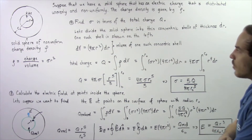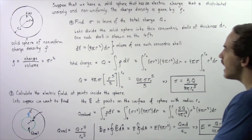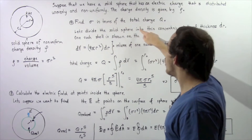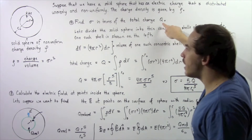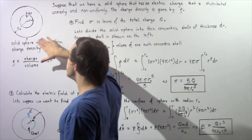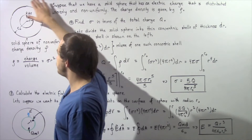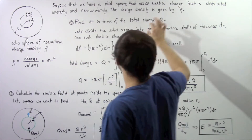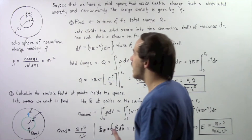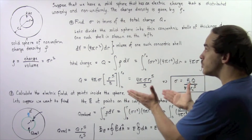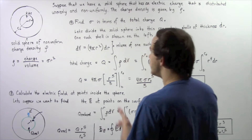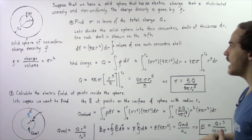In part A, we want to find sigma in terms of the total charge q. This entire solid three-dimensional sphere has charge q and radius r-naught. We need to complete part A in order to do part B, so let's begin.